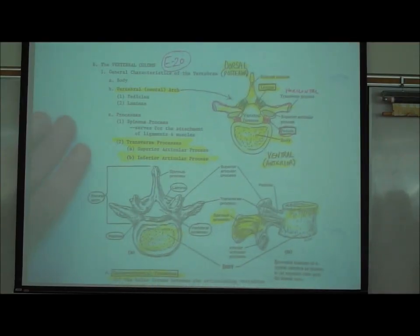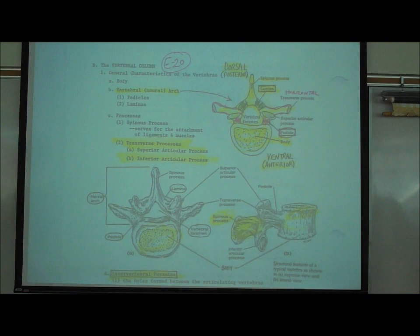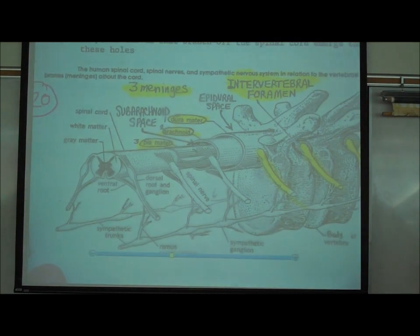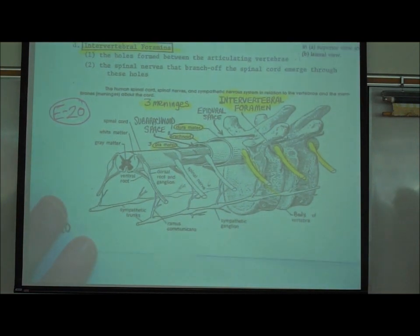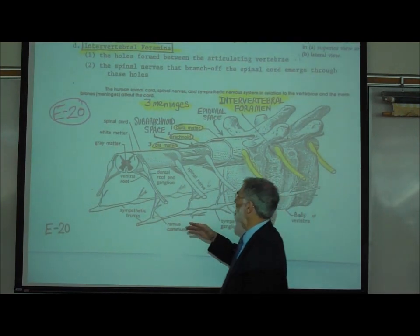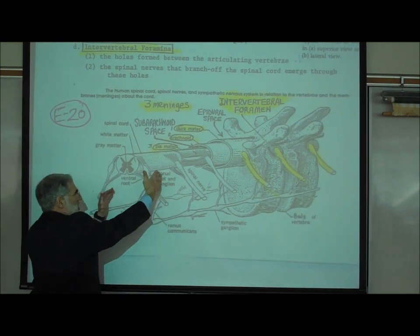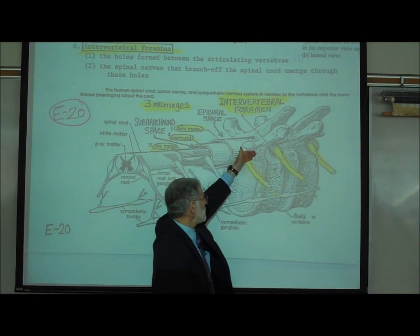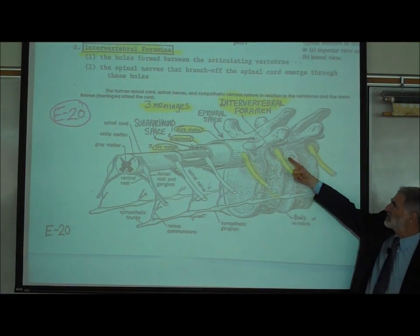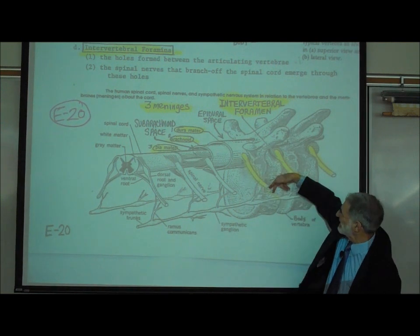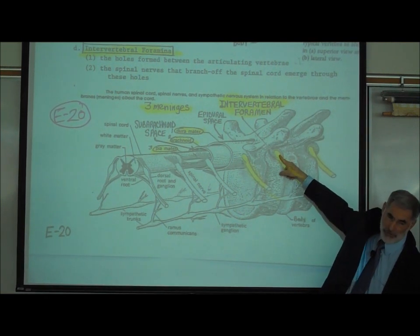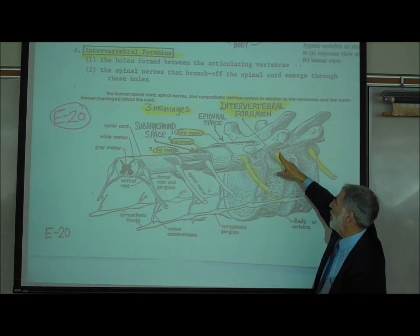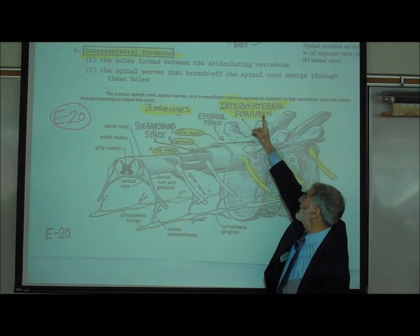In the lecture outline on page E20, you'll notice at the bottom it shows how the spinal cord passes through the vertebral column. There are spinal nerves coming off the spinal cord, and these spinal nerves exit through holes or openings between the vertebrae. These holes or openings between the vertebrae are called intervertebral foramen.